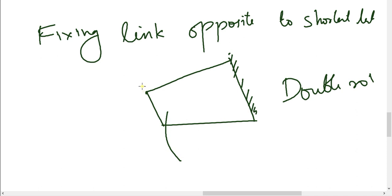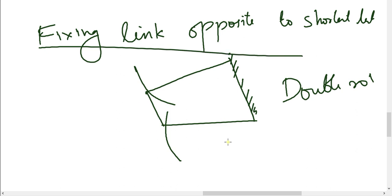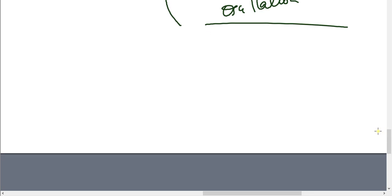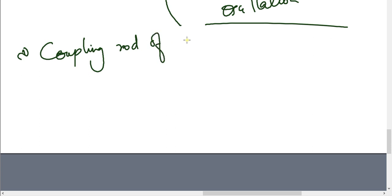The Double Rocker Mechanism produces reciprocating action, also called oscillatory motion. This is the 4-bar chain inversion summary. A special case of the 4-bar chain inversion is the Coupling Rod of a Locomotive.